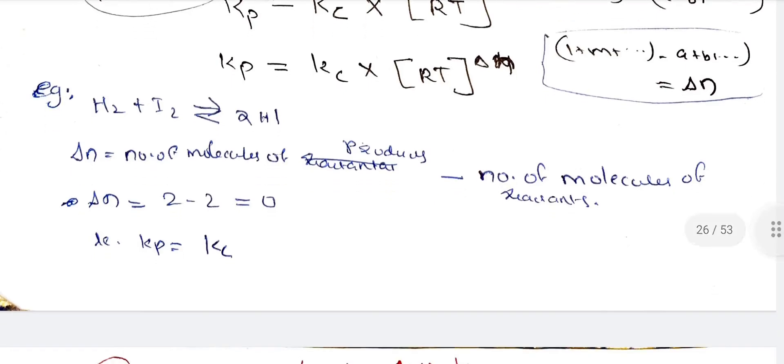For example: H₂ plus I₂ gives 2HI. Delta n is the number of molecules of products minus number of molecules of reactants, which is 2 minus 2 equals 0. Therefore, Kp and Kc are equal for this reaction. We can prove that when delta n is 0, Kp equals Kc.